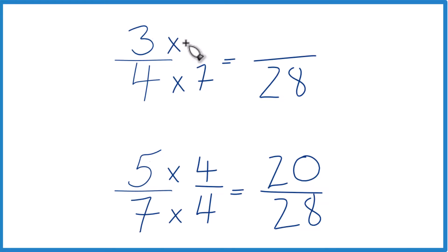Up here, we'll multiply by 7. 3 times 7 is 21. Now, same denominator.